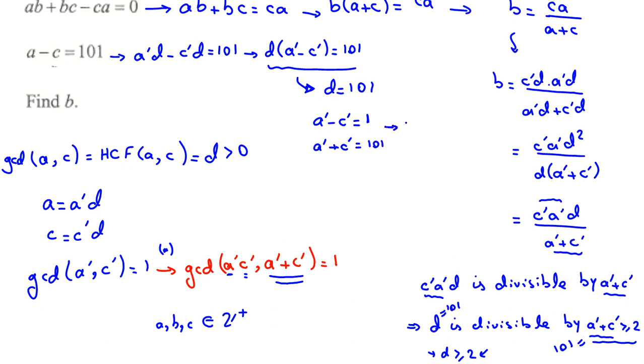Now we can find a prime and c prime. If we add these two equations, 2a prime equals 102, so a prime equals 51. If we replace a prime 51, c prime equals 50. And B is c prime 50 times a prime 51 times D, which is 101, over a prime plus c prime, which is 101. We can cancel. 50 times 51, 5 times 1 is 5, 5 times 5 is 25. So the answer is 2550.